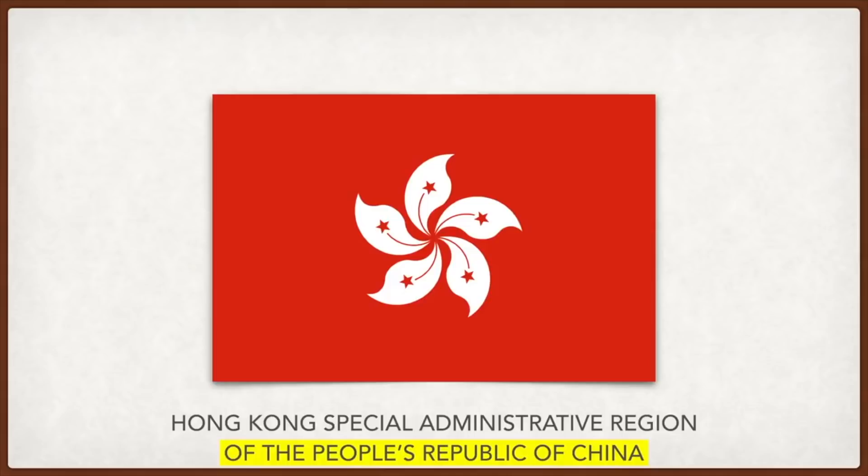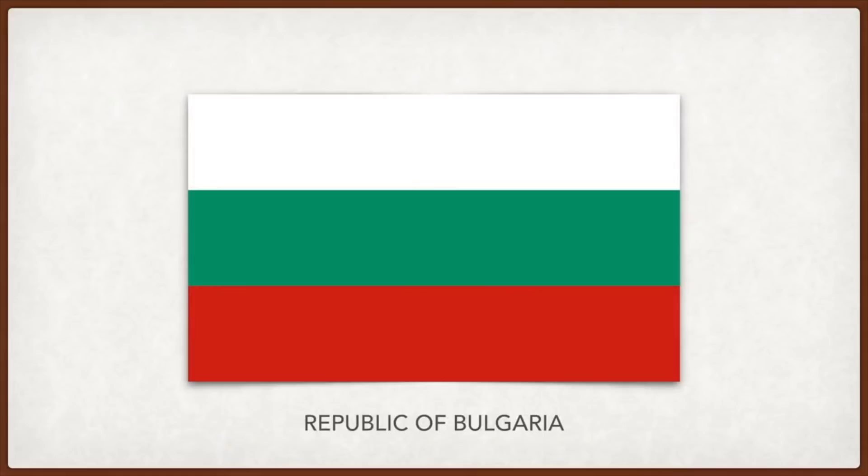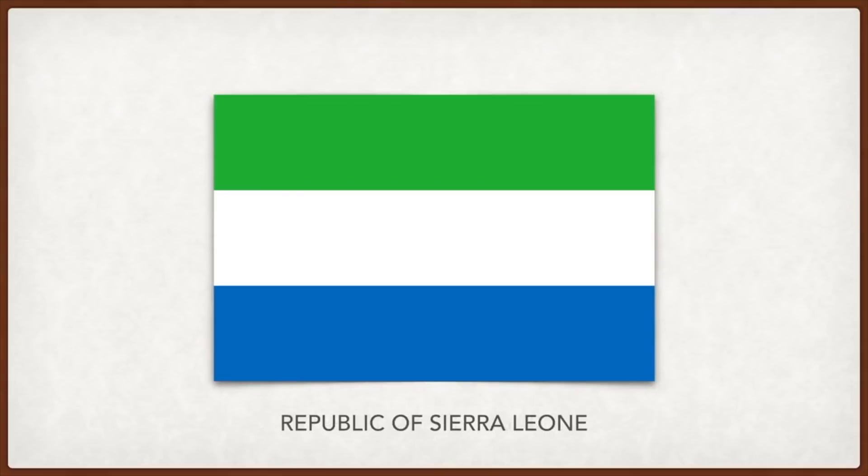Bulgaria: the white stands for peace, love, and freedom; the green stands for the agricultural wealth of Bulgaria; and red is for the struggle for independence and military courage. Sierra Leone: the green stands for the country's agriculture and mountains, the white for unity and justice, and the blue for the country's natural harbor at Freetown and the hope of contributing to world peace.